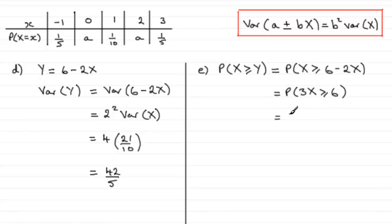And I can now divide both sides by 3, and this is the same as the probability that X is greater than or equal to 2, 6 over 3 being the 2.